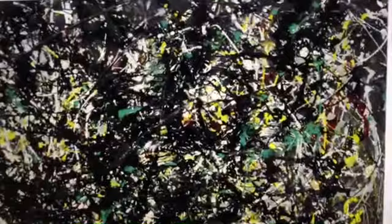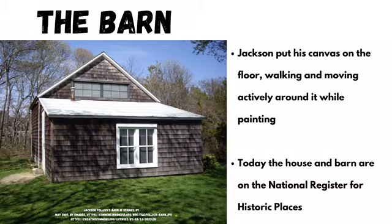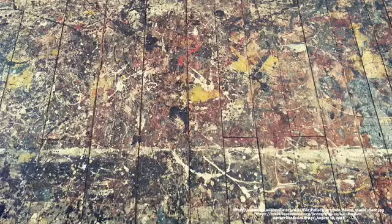As the art world became busier in New York City, Jackson Pollock and his wife, artist Lee Krasner, decided to live on Long Island in a farmhouse. The story goes that there was a bedroom studio in the house for Lee, but outside, Jackson used the barn. They promised each other they would only go to each other's studios by invitation. Today, the house and barn are on the National Register for Historic Places, and people can see the barn floor with its layers and layers of paint dripped, as Jackson moved and painted, almost dancing around his wonderful canvases.